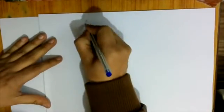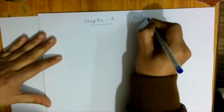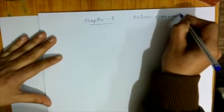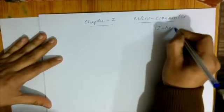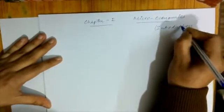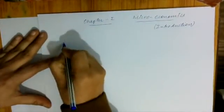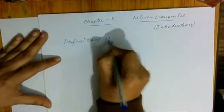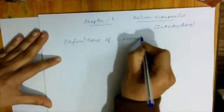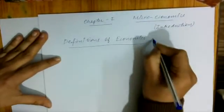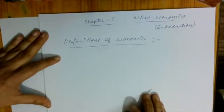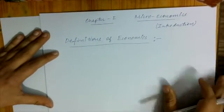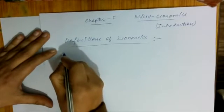We will do Chapter 1, Microeconomics. Basically, it deals with the introduction — what is in Microeconomics. We will discuss everything in Microeconomics. First of all, we will discuss the definitions. Definitions of Economics. Some people have given some definitions, and there are more than 15,000 definitions of economics. But at the plus-two level, there are only 4 definitions that we have to cover.